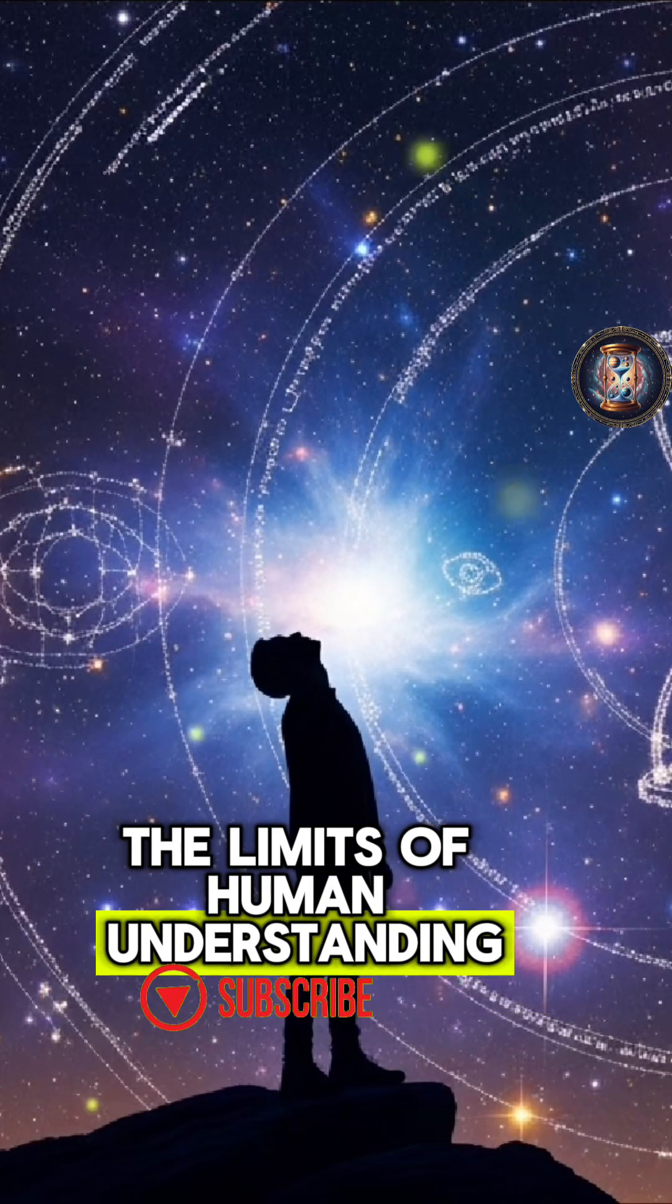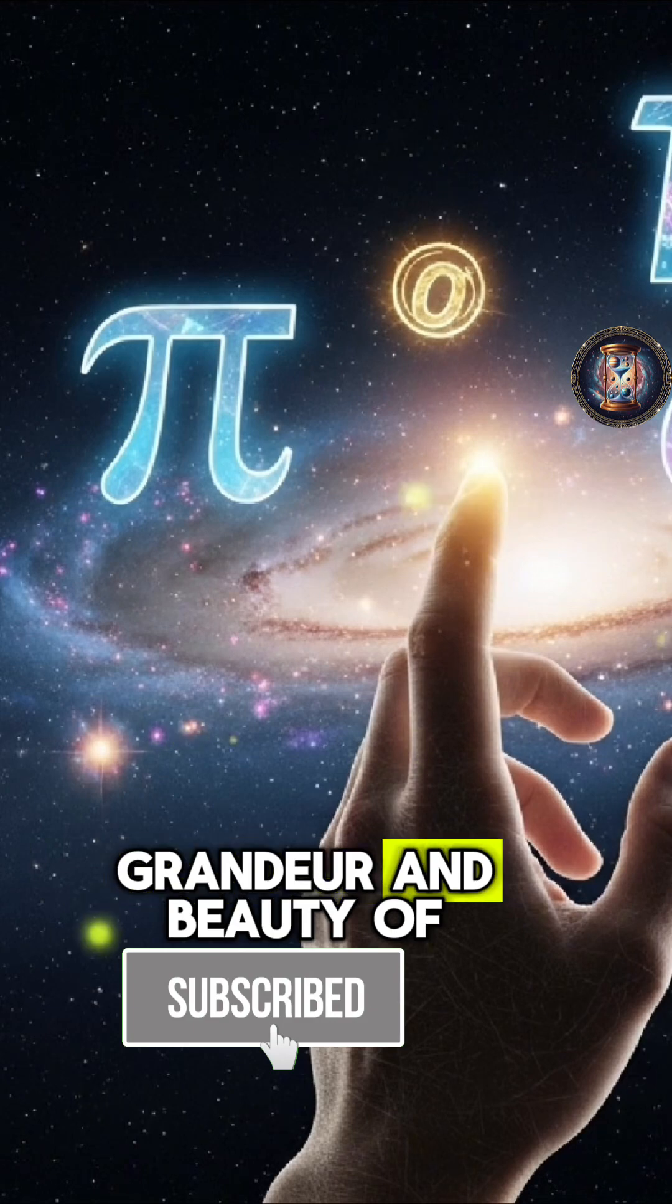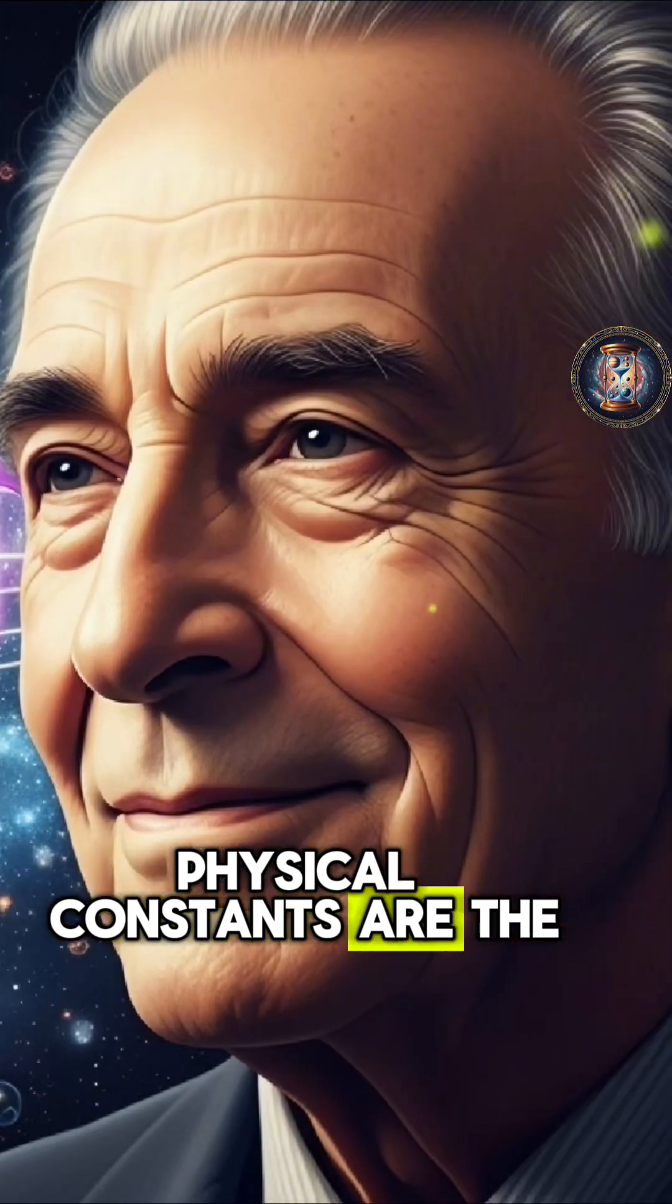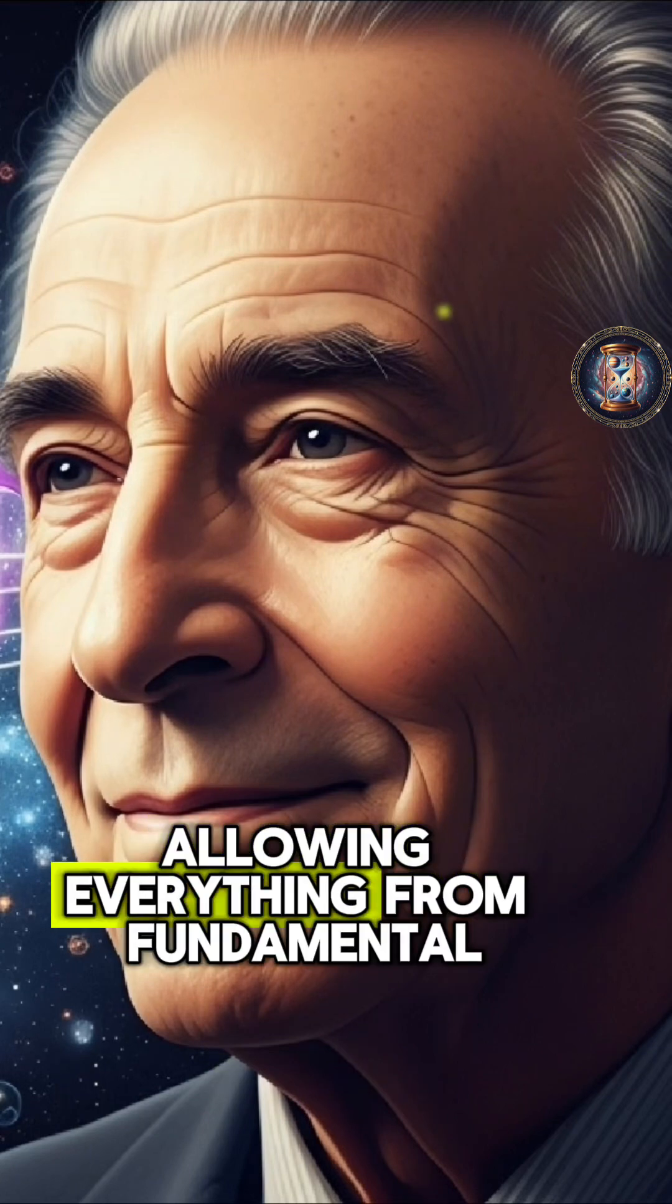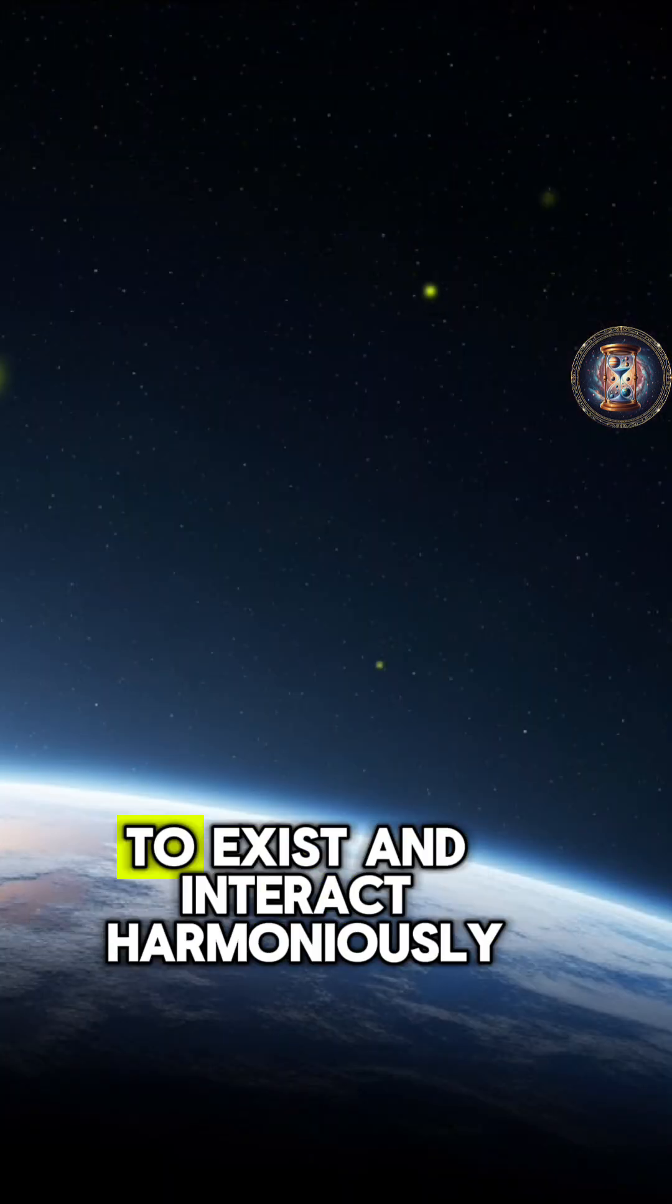The limits of human understanding. Carl Sagan once spoke of the grandeur and beauty of the laws of the universe. Physical constants are the notes that form that grand symphony, allowing everything from fundamental particles to colossal galaxies to exist and interact harmoniously.